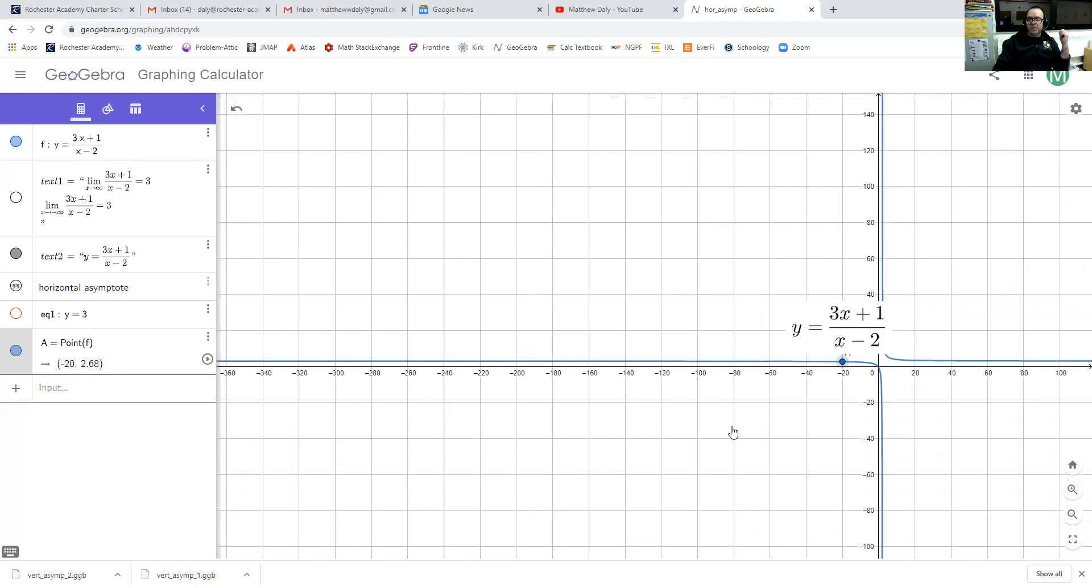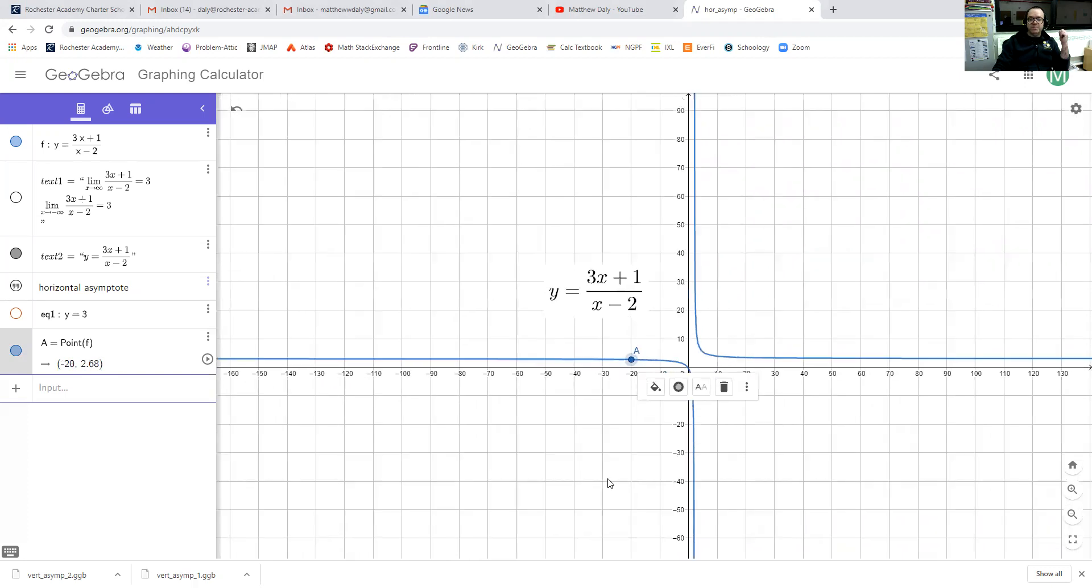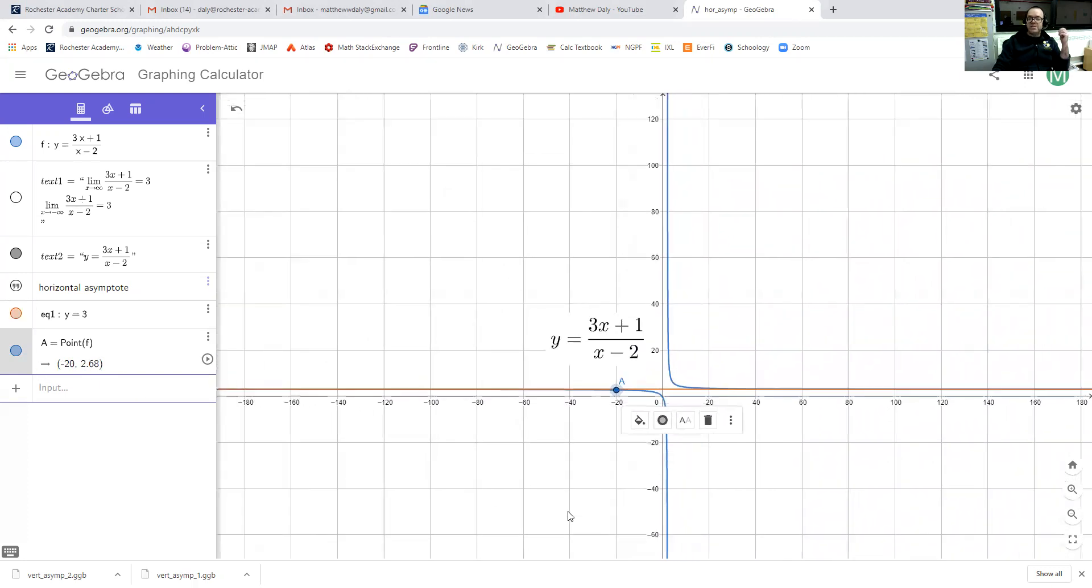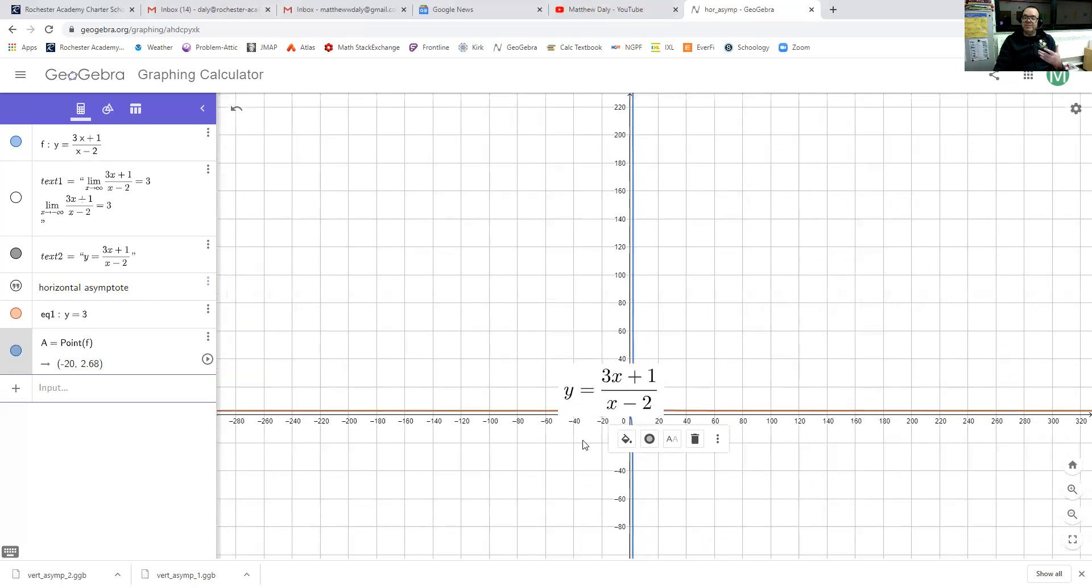So let me draw this line, y equals 3. And just like we had the vertical asymptote, which did a really good job of describing the behavior of the function near 2, this line, y equals 3, is doing a really good job of capturing the left and right behavior of the function.